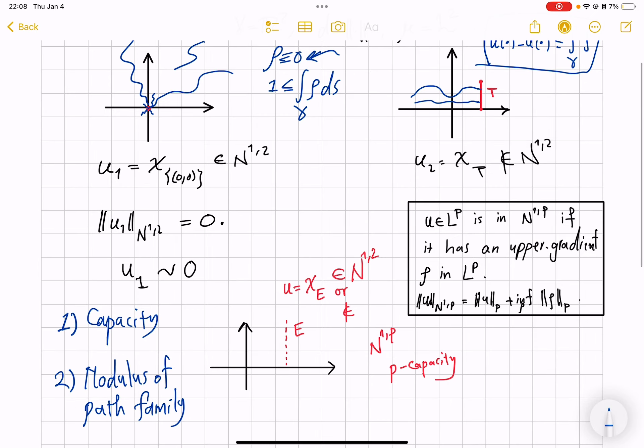So this second tool, again, will be very helpful. The reason U2 is not in the Newtonian space is twofold. Number one, that T is, has capacity positive, not zero. That is, T is too large a set.